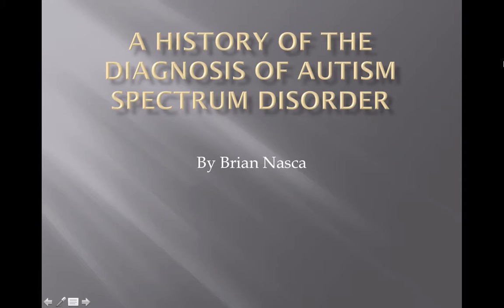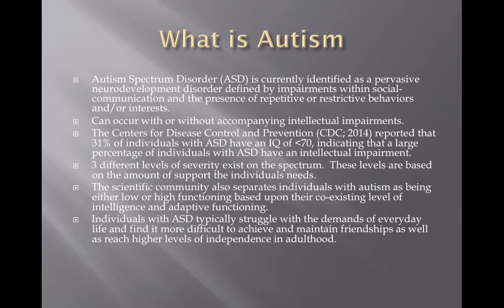Hi, my name is Brian Aska, and I'm here to talk about a history of the diagnosis of Autism Spectrum Disorder. I wanted to do this presentation due to the recent changes we've seen from the DSM-4TR to the DSM-5. A lot of things were taken out and a lot of things were added to the new definition of Autism Spectrum Disorder, so I want to go over a brief history of how it went from what it was classified in the 1900s to what it is now.